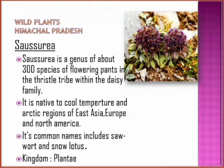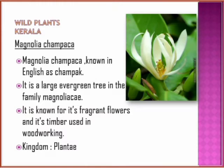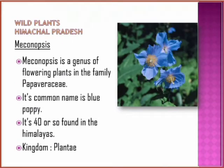Magnolia champaca, known in English as champak, is known for its fragrant flowers and its timber used in woodworking. Mecanopsis, whose common name is blue poppy, has about 40 or so species found in the Himalayan region.